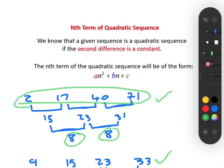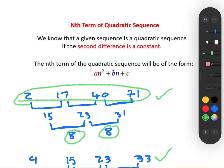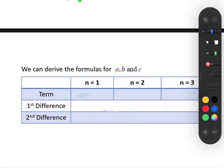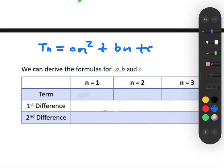Let's look at the second point: the nth term of a quadratic sequence will be of the form an² + bn + c. If we want to find the general term, we're going to derive the formulas for a, b, and c, so that when we're given a sequence and have proved it's quadratic by finding a constant second difference, we can find the general term of that sequence.